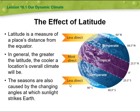The seasons are also caused by the changing angles at which sunlight strikes the Earth. We have zero degrees, which is the tropical areas, then 23.5 north and 66.5 north for the temperate zones, and 90 degrees north for the polar zones.